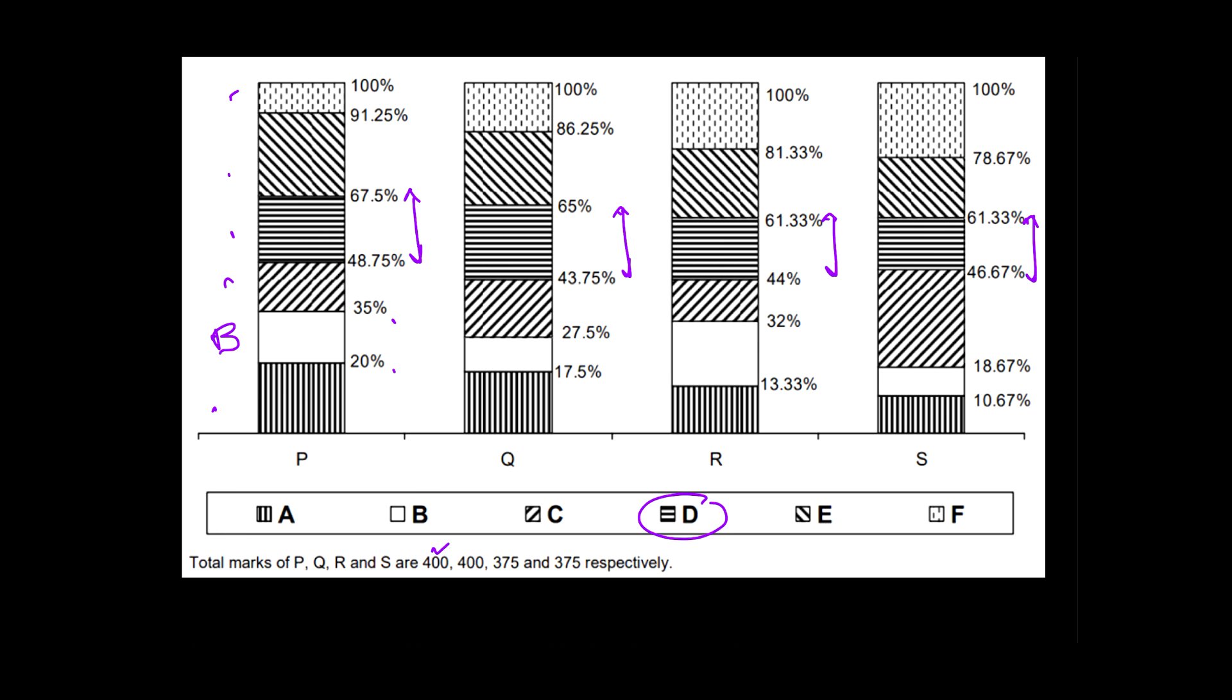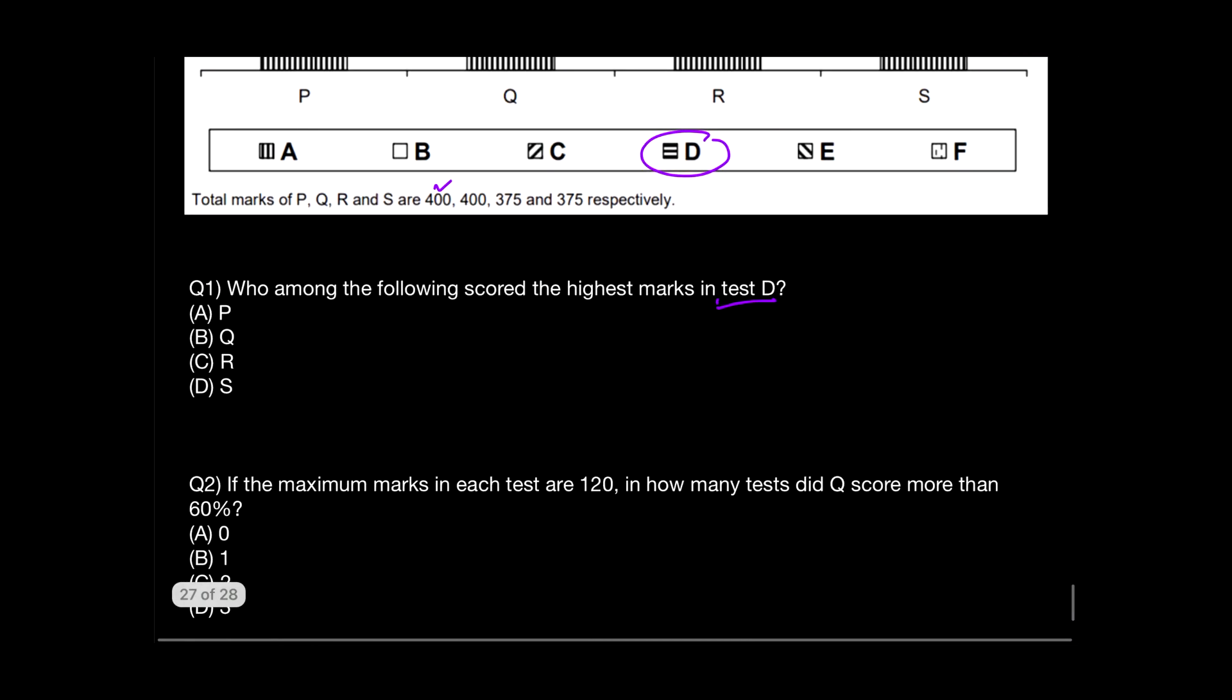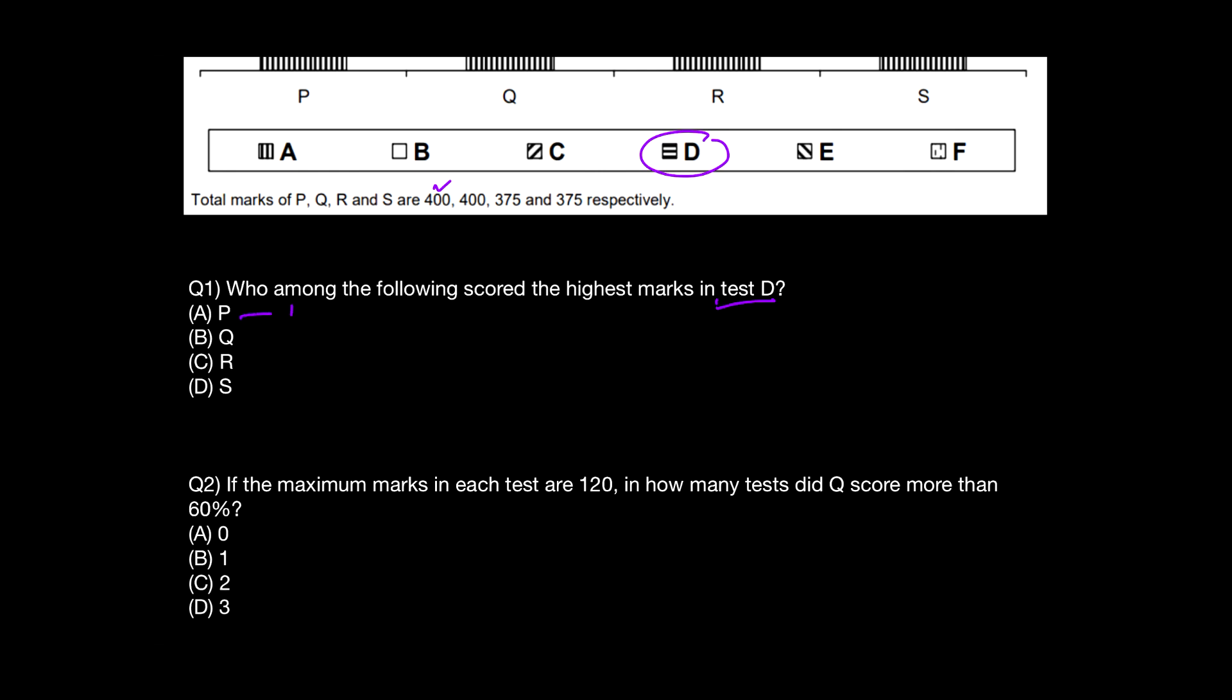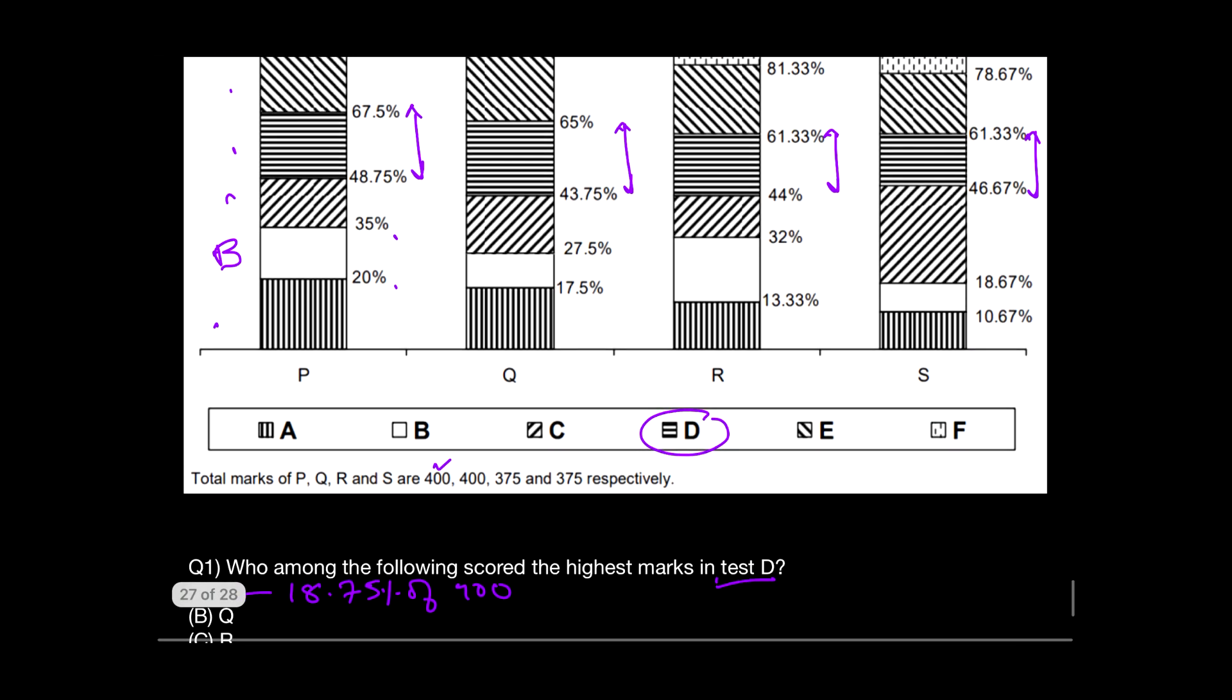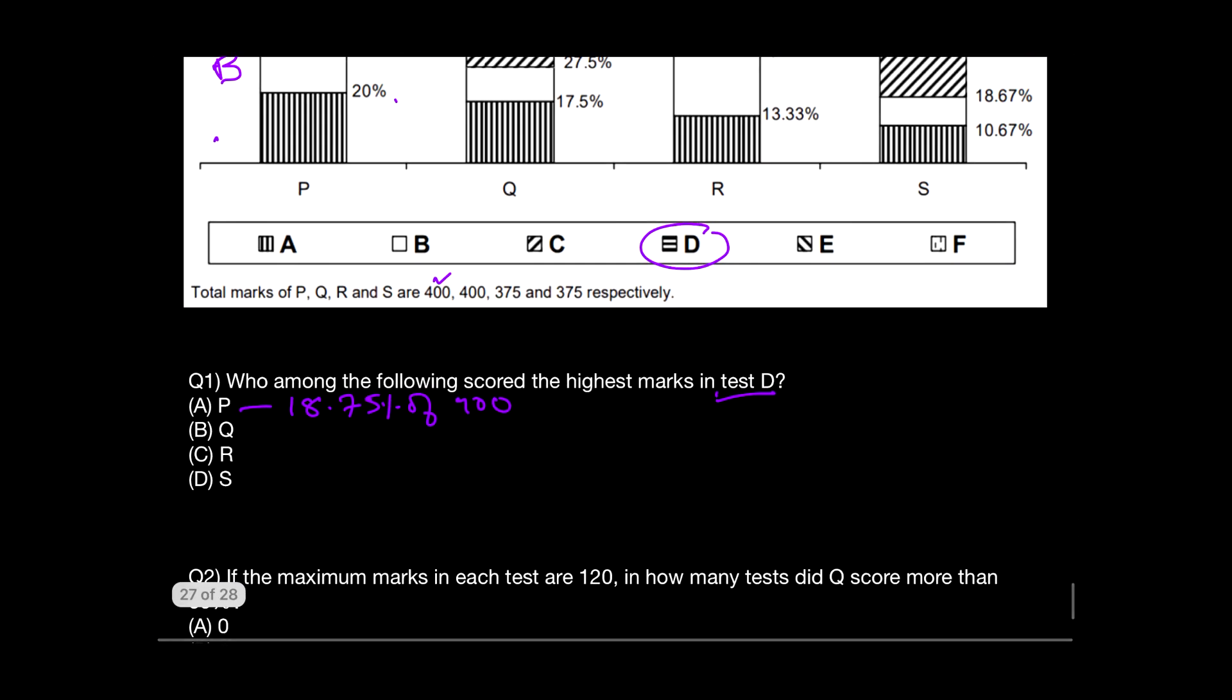When we compare all the percentages, we will subtract 67.5 minus 48.75. This difference in the percentage equals 18.75%. For P, the difference is 18.75% of 400. For Q, the value for D becomes 65 minus 43.75, which you can do mentally. That's 21.25%. This is quite obvious that since the base number 400 is the same for P and Q, 21% will surely be more than 18%, so I know that A is not my answer for sure. So far we're considering Q to be the highest number.